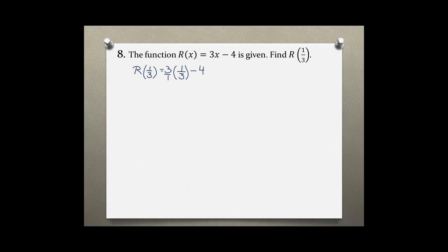I always prefer to cross-simplify. The 3 goes into 3 one time, so I am left with 1 minus 4, which equals negative 3.